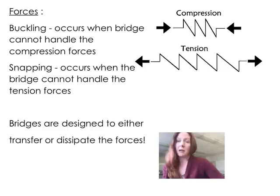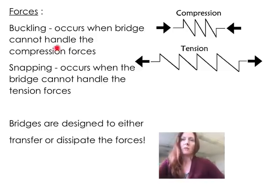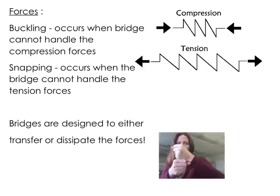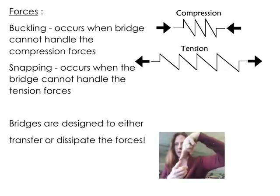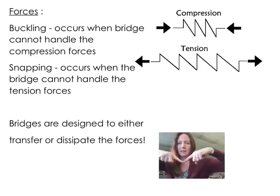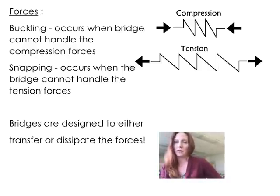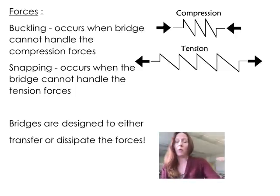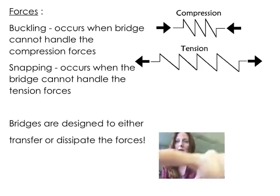We're going to look at some things that can go wrong when you don't account for the forces on a bridge. The first is buckling — buckling occurs when a bridge can't handle compression, so a piece of the bridge collapses on itself. Snapping occurs when something is being tensed and it can't hold the tension forces. When you design a bridge you want to make sure the load is transferred and spread out so that no individual member takes all the forces, preventing buckling or snapping.